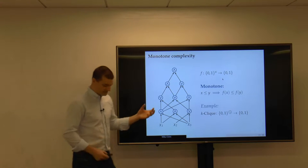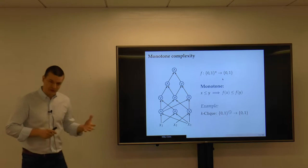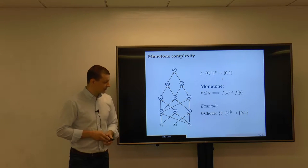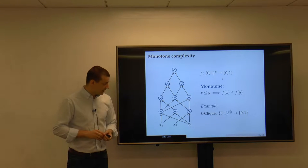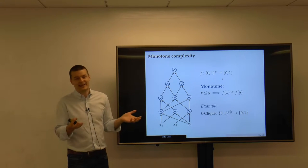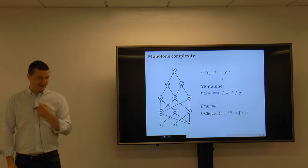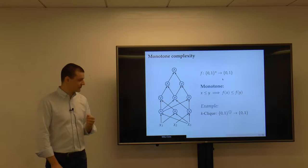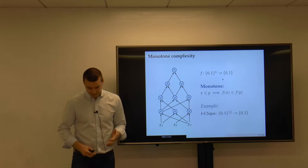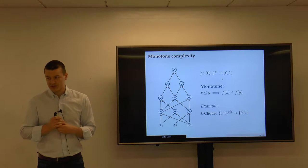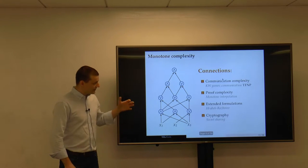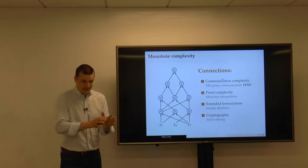Studying monotone circuit complexity was all the rage in the 80s. A very famous result was that the k-clique function requires super-polynomial size monotone circuits — separating P and NP in the world of monotone computations. Lower bounds were subsequently made exponential. At the time people were excited; to separate P from NP in the non-monotone world, all you need to do is handle negations. Maybe now we're less optimistic, though people are still trying. I study these things because they are among the strongest models of computation for which we can show unconditional lower bounds, and also because they're beautiful and connected to so many other areas.